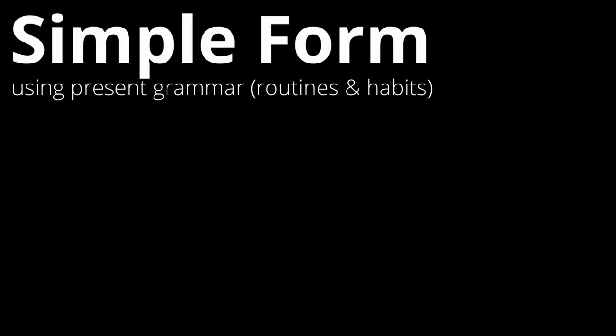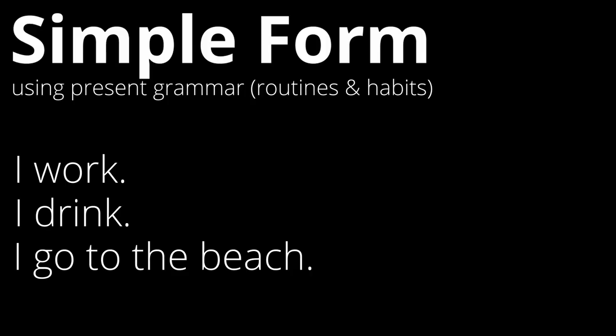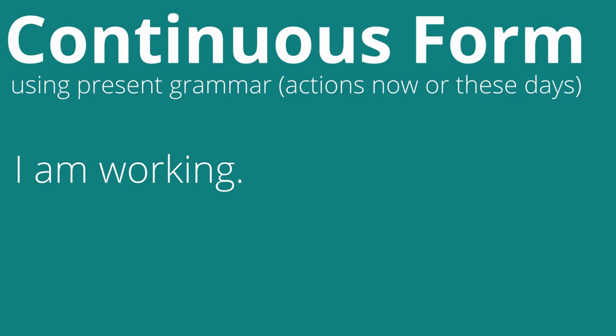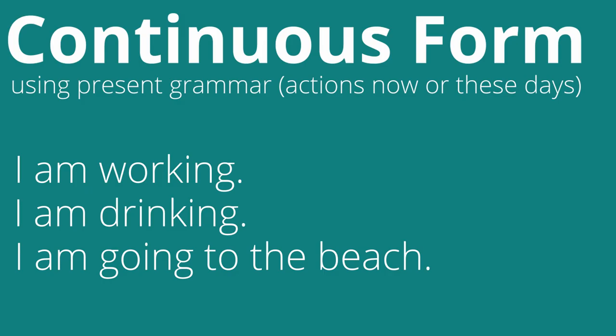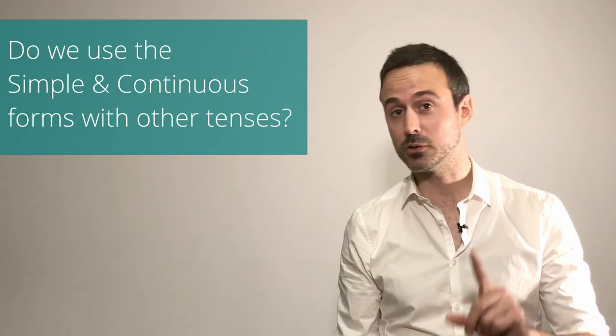We use present grammar in the simple form to talk about routines and habits. For example: every day I work, I drink, I go to the beach — regular things. We use present grammar in the continuous form to talk about actions which are happening now or these days. For example: I'm working a lot these days, or I am drinking coffee right now, or I'm going to the beach right now.